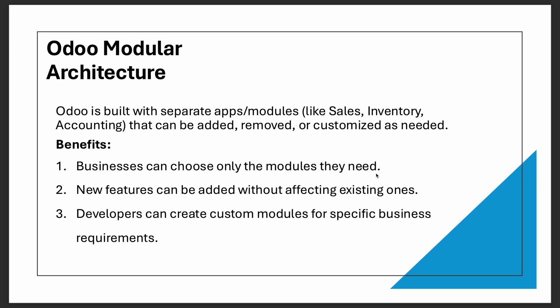Next is Odoo's modular architecture. Odoo is built with separate apps or modules like Sales, Accounting, Inventory, Purchase, etc. Whenever we want, we can install or uninstall them and customize them. The benefits are: we can choose only the modules relevant to our business sector, new features can be added without affecting existing ones, and developers can create custom modules for specific business requirements.